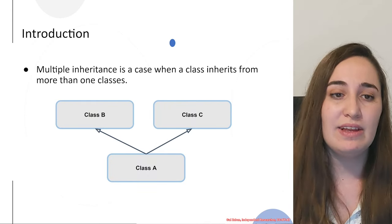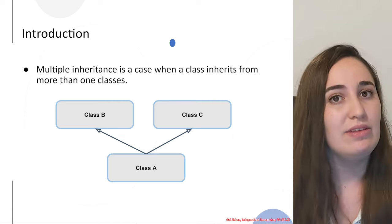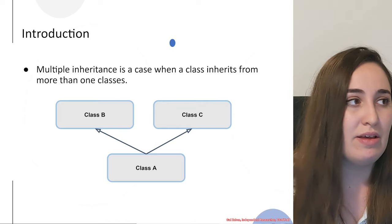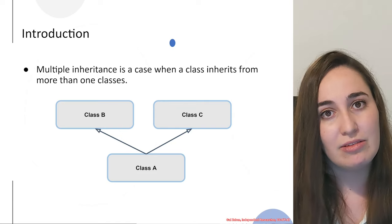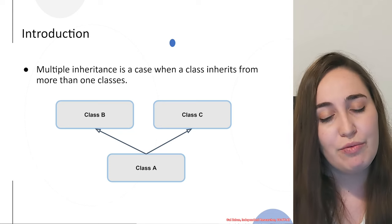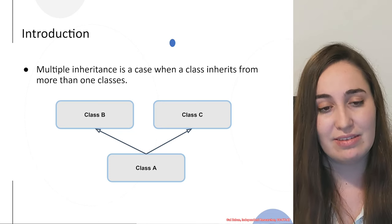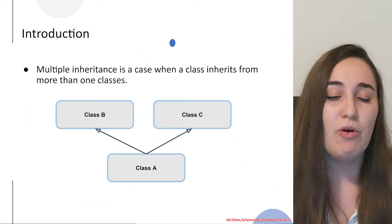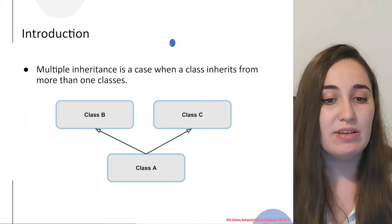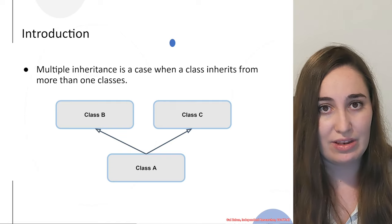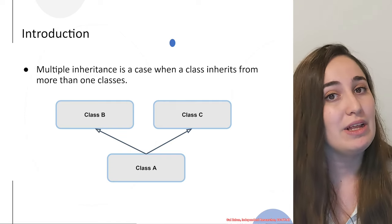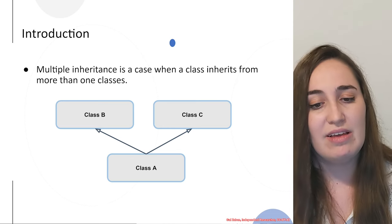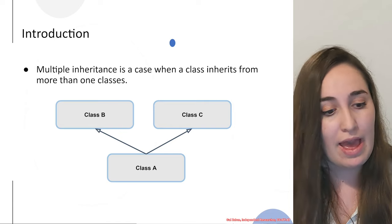As an introduction, we need to understand what exactly multiple inheritance is. Multiple inheritance is a case when you have a class that inherits from more than one other class. In the example shown in the slide, we have class A that can inherit from more than one base class — in this case, it will inherit from both class B and class C.